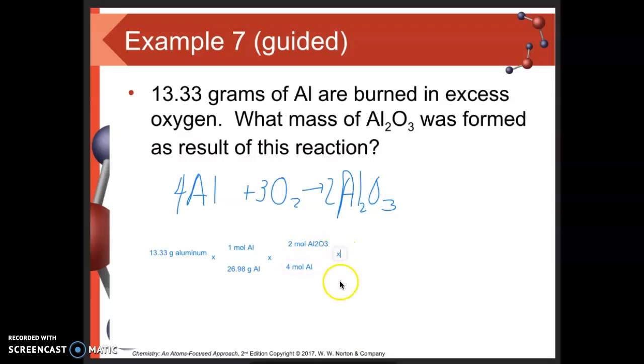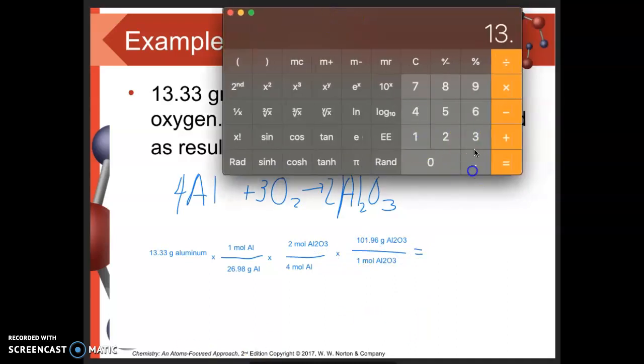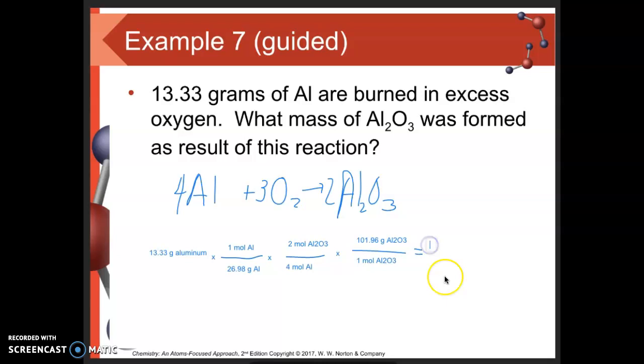Last step: convert moles of aluminum oxide into grams. One mole of aluminum oxide is 101.96 grams. Taking that all the way through: 13.33 multiplied by 2 multiplied by 101.96 divided by 26.98 divided by 4, to four significant figures, I get 25.19 grams of aluminum oxide. That would be my anticipated mass of aluminum oxide from this reaction.